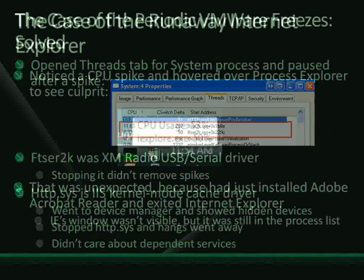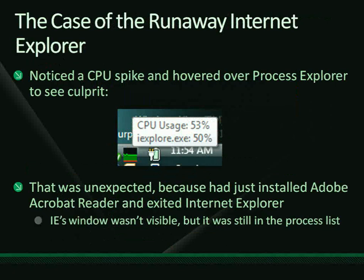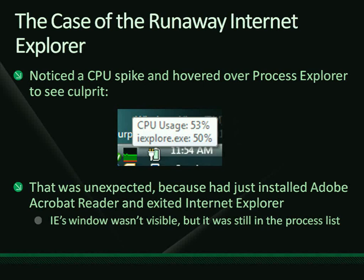Another case: one day the Process Explorer tray icon was half green — meaning one of my two cores was fully pegged. Moving the mouse over it showed it was Internet Explorer. But when I looked at my desktop, I didn't even have IE visible — I'd exited it a while back. Rather than just killing IE, I chose to investigate so that if this was a recurring problem, I'd have it taken care of.